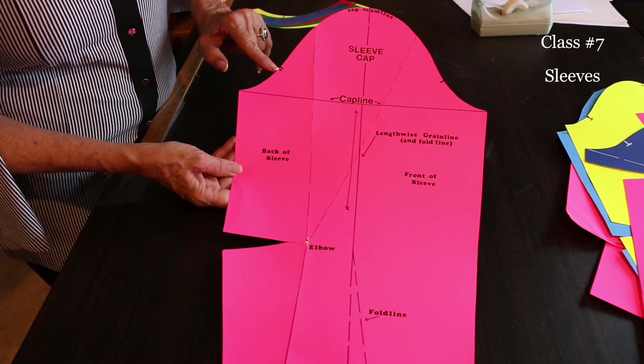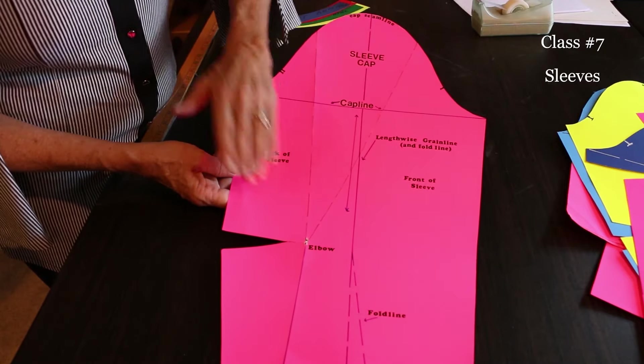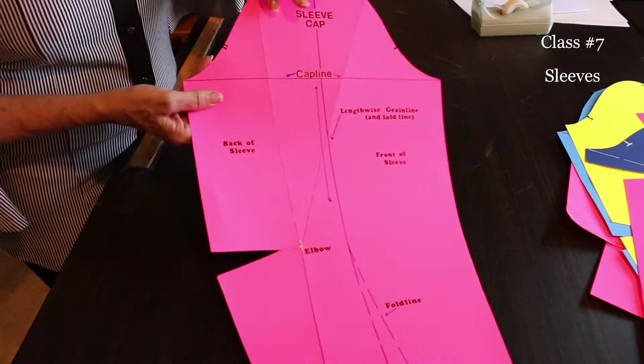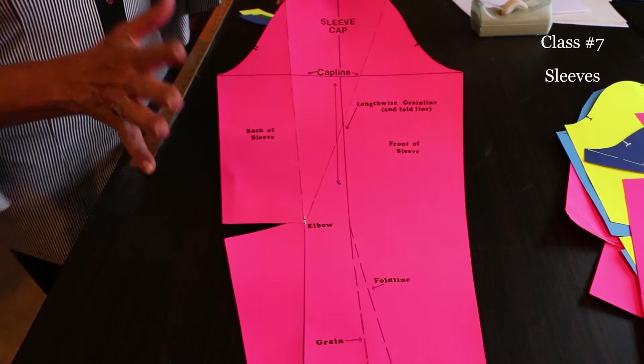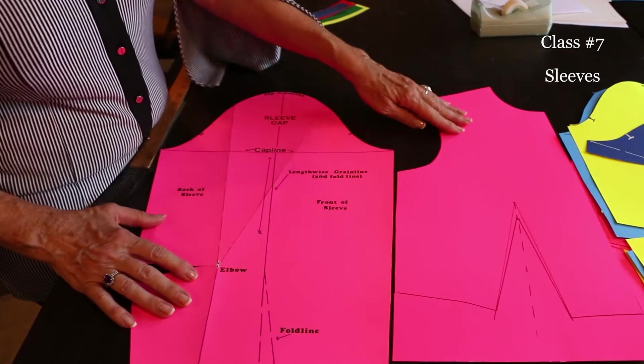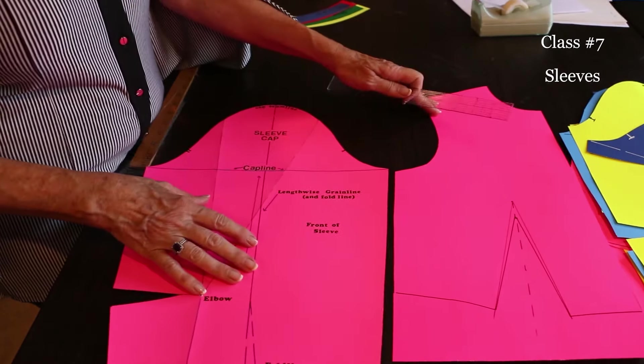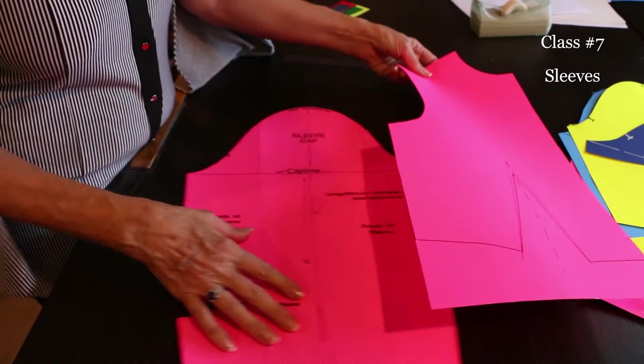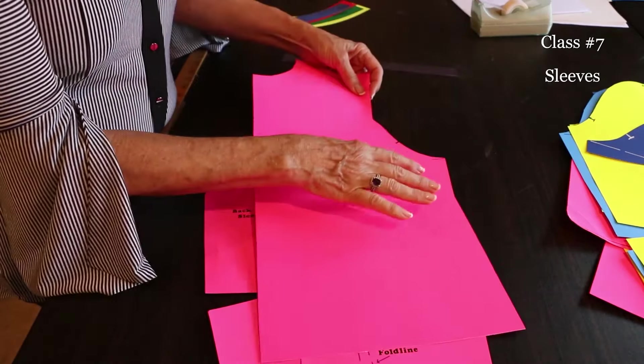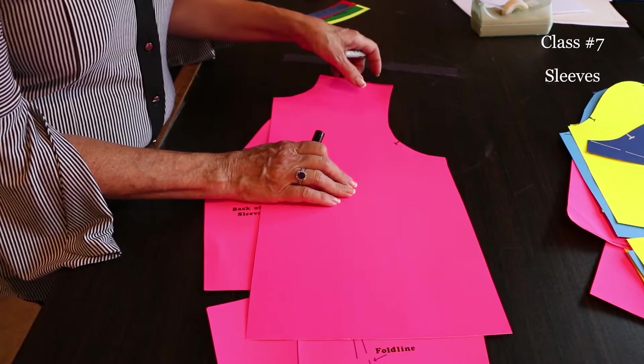In our basic sleeve we've got a dart. Our dart's at the elbow, it's in the back of the sleeve. Generally the back is connotated with two notches while the front is done with one notch. And how we know the difference is the dart's always in the back or the bend is always toward the back. Really what I want to talk about first and probably what mystifies most is the ease.